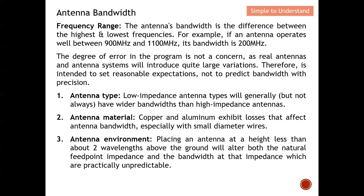What are the key parameters? Firstly, we need to know the antenna type. Typically, low impedance antennas will in general have a wider bandwidth — low impedance means wide bandwidth. High impedance means a narrow bandwidth.